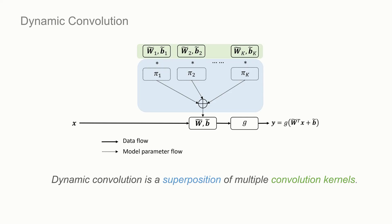dynamic convolution is the superposition of multiple convolution kernels. Here we have k parallel convolution kernels w1b1 to wkbk. They are aggregated by attention π1 to πk. These attentions are computed by a function over the input x. Thus, the superposition is input dependent.